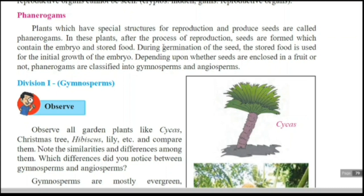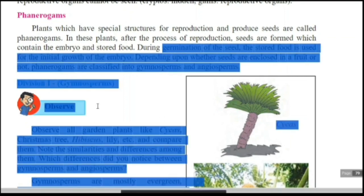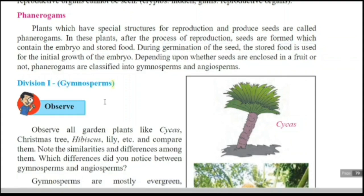Depending upon whether the seeds are enclosed in a fruit or not, phanerogames are classified into gymnosperms and angiosperms. So the first division is gymnosperms.